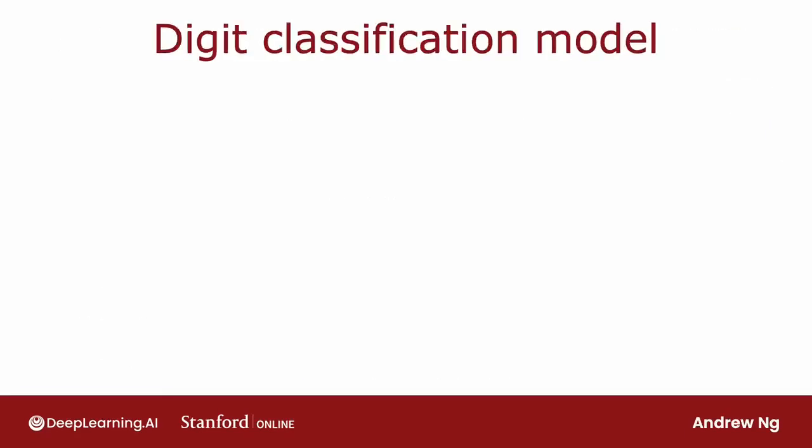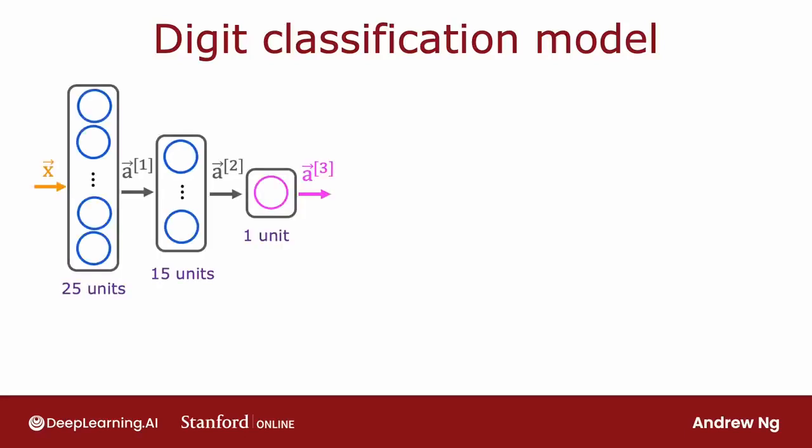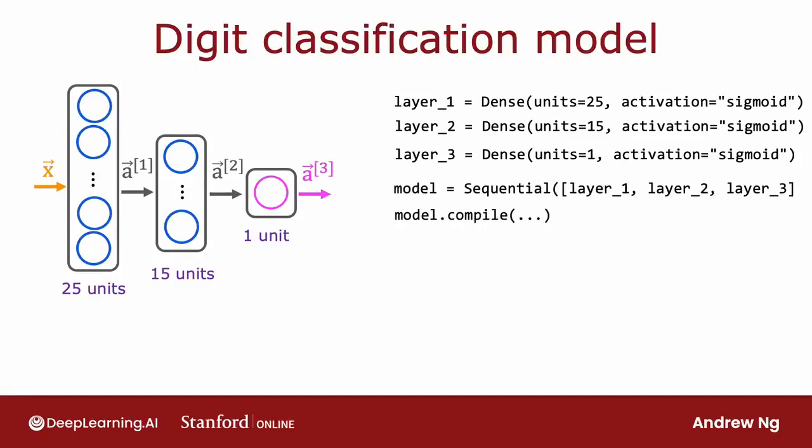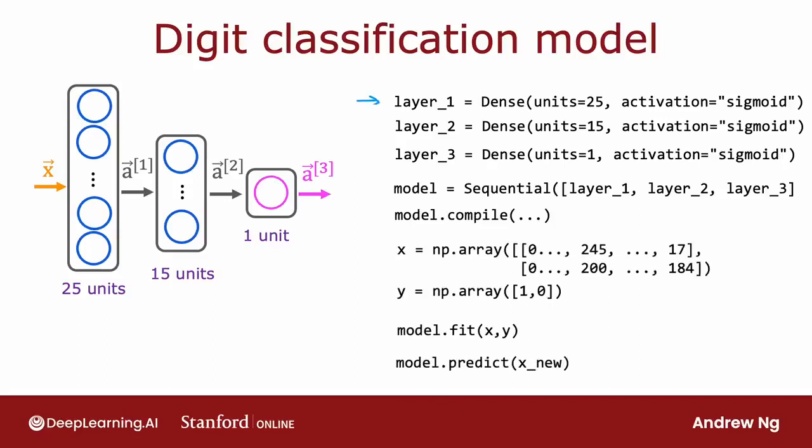Let's redo this for the digit classification example as well. So previously, we had x is this input, layer one is a layer, a1 equals layer one applied to x, and so on through layer two and layer three in order to try to classify a digit. With this new coding convention, with using TensorFlow's sequential function, you can instead specify what are layer one, layer two, layer three, and tell TensorFlow to string the layers together for you into a neural network.